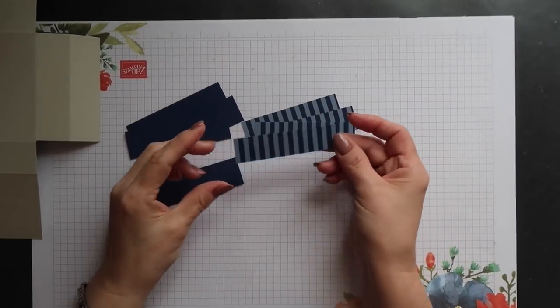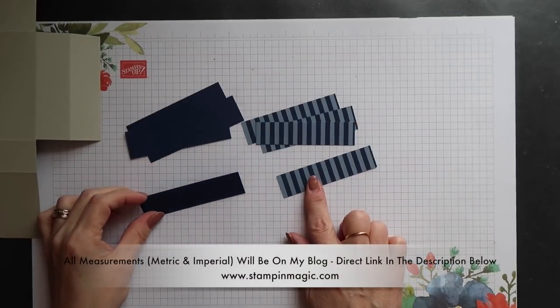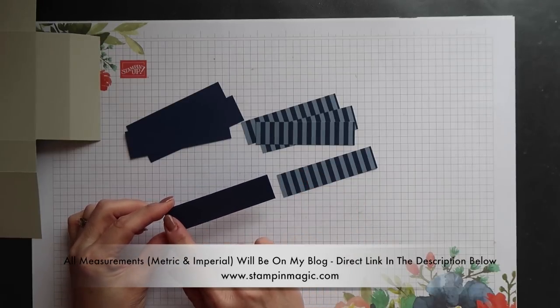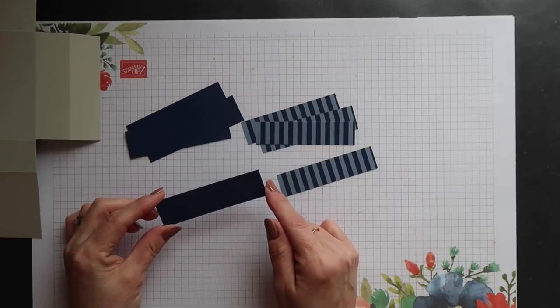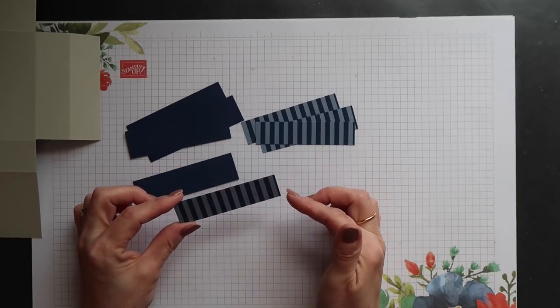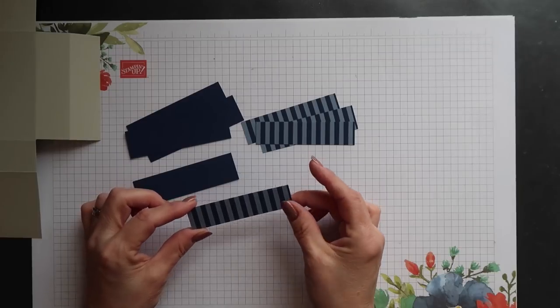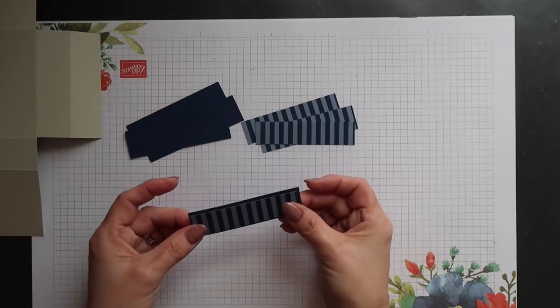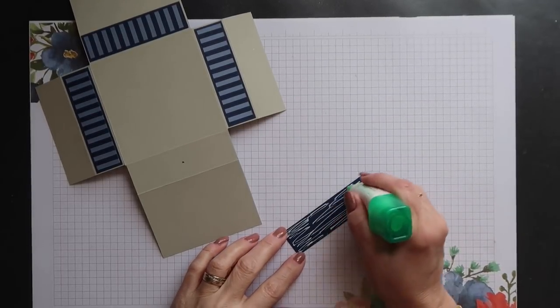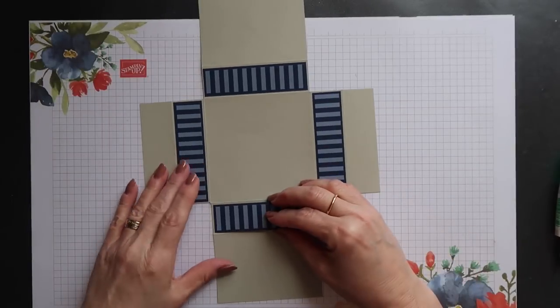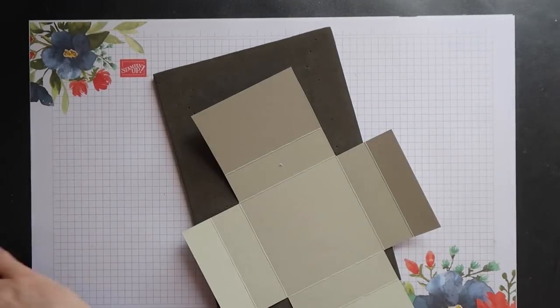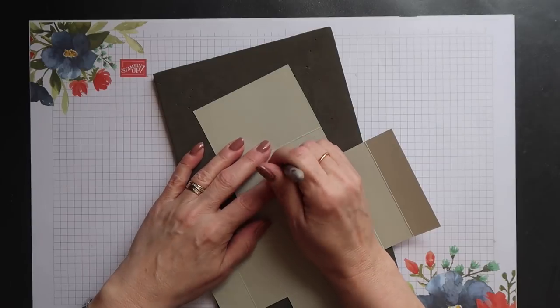For the sides you want four pieces of Night of Navy card and four pieces of the Designer Series paper. The card measures 3 5/8 of an inch by 1 inch, which is 9.2 cm by 2.5 cm. The paper measures 3 1/2 inches by 7/8 of an inch, which is 8.8 cm by 2.1 cm. First you want to add the paper onto your card, and then you can add all four panels to the sides of the box. You can then turn your box over and re-pierce the hole through the panel that you've just added.